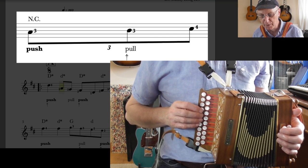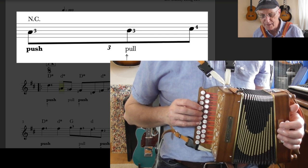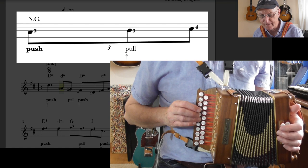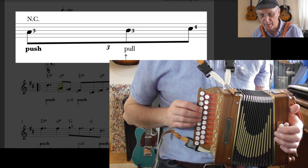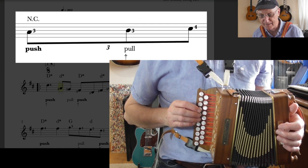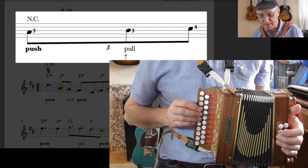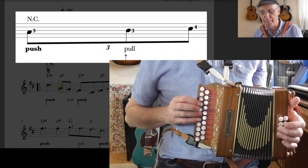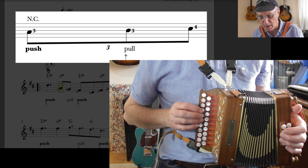You've got push, pull, pull, like that. So you push in for the A, then you pull out without repressing the button, hence the dagger, like that. Now to give you the note B and keep pulling and the button below the little finger will give you C sharp.